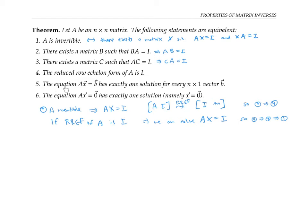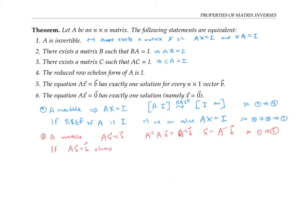Statement five says the vector equation Ax equals B has exactly one solution for every n by one vector B. If A is invertible, we solve Ax equals B by multiplying both sides on the left by A inverse, giving x equals A inverse B — one unique solution. On the other hand, if Ax equals B always has a unique solution, then row reduction puts A in identity form, which implies A is invertible. So A being invertible is equivalent to statement five.